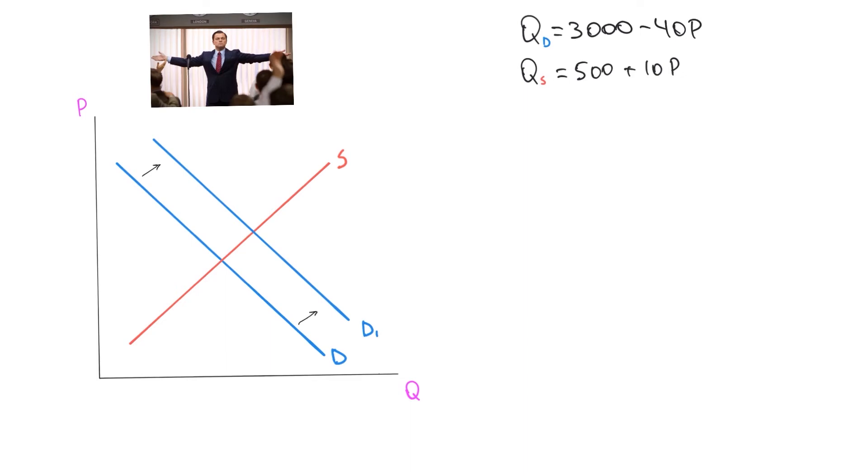Well, let's take a look. We set it up in the same way as before. We set the two equations equal to each other. And we have 3000 minus 40p equals 500 plus 10p. If we rearrange it, we get 2500 equals 50p, or the price is equal to $50. And we plug it back into the first equation. We have 500 plus 10 times 50, 1000.